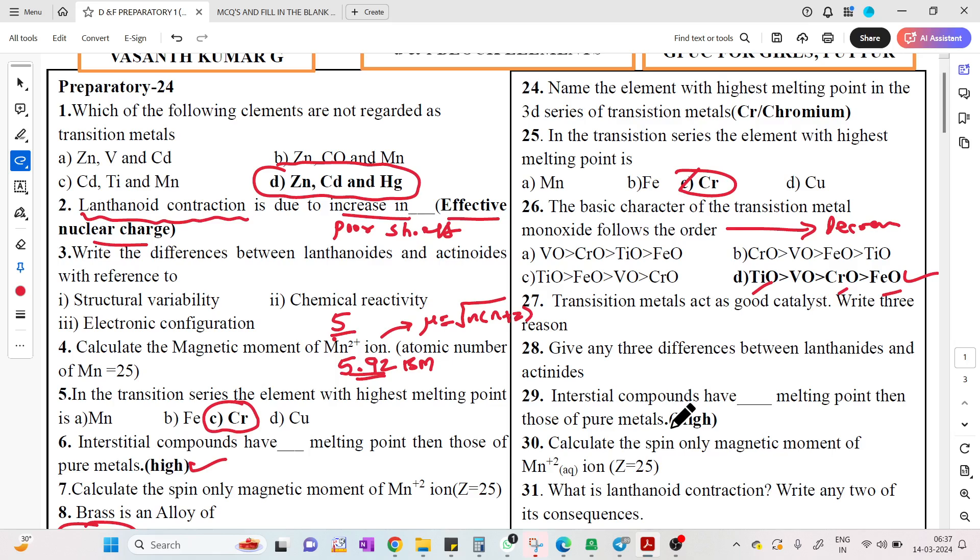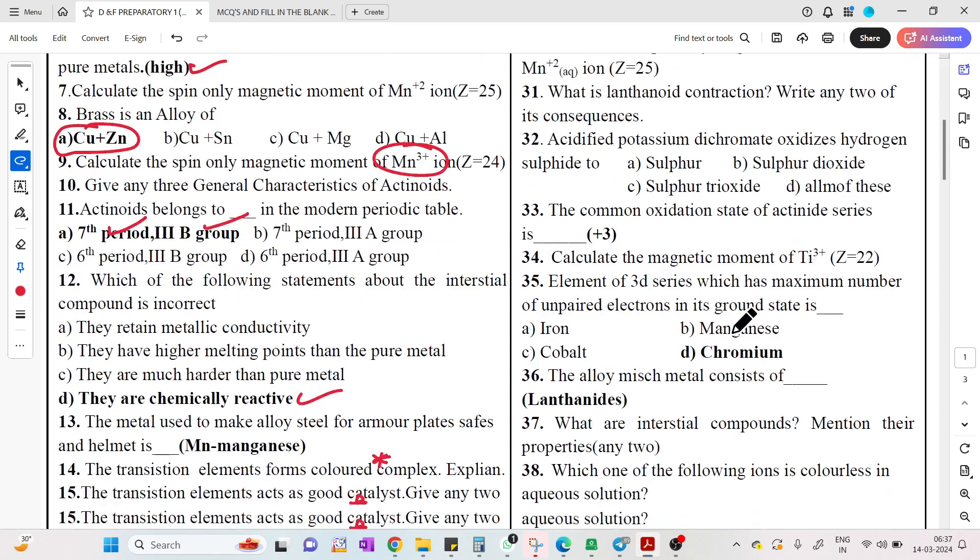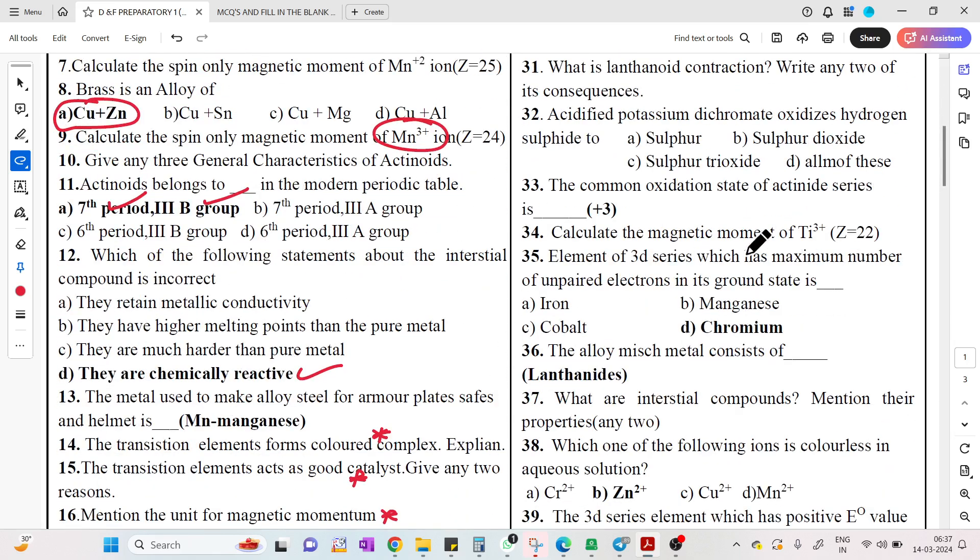Acidified potassium dichromate oxidizes hydrogen sulfide to sulfur - S2- gives rise to S. The common oxidation state is plus 3. Element in 3D series which has maximum number of unpaired electrons: chromium is the answer.